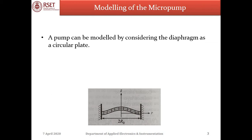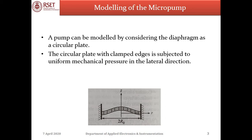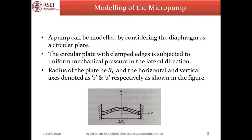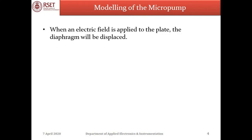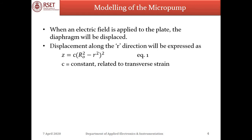As shown in the figure, the circular plate with clamped edges is subjected to uniform mechanical pressure in the lateral directions. The radius of the plate is denoted as R0, and the horizontal and vertical axes are denoted as R and Z respectively. When an electric field is applied to the plate, the diaphragm is displaced. The displacement along the R direction is expressed as Z = C(R0² − R²)², where C is a constant related to transverse strain.